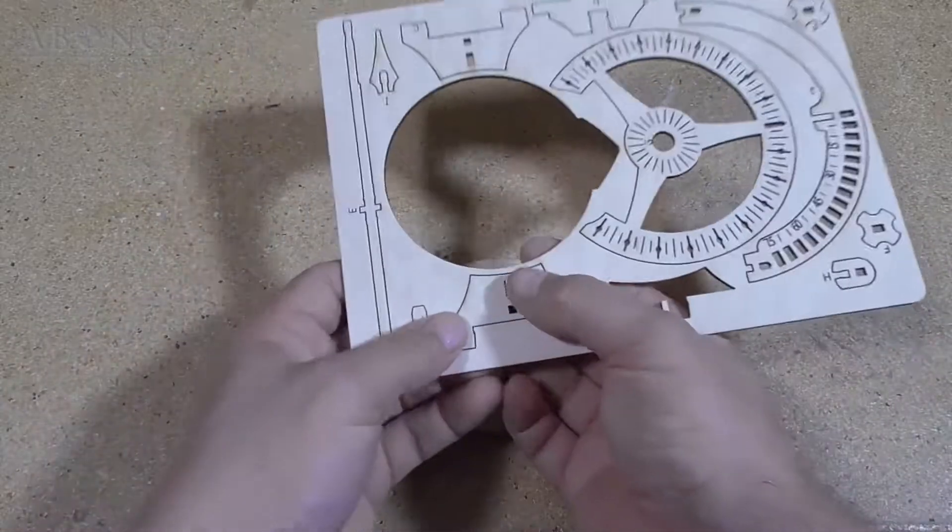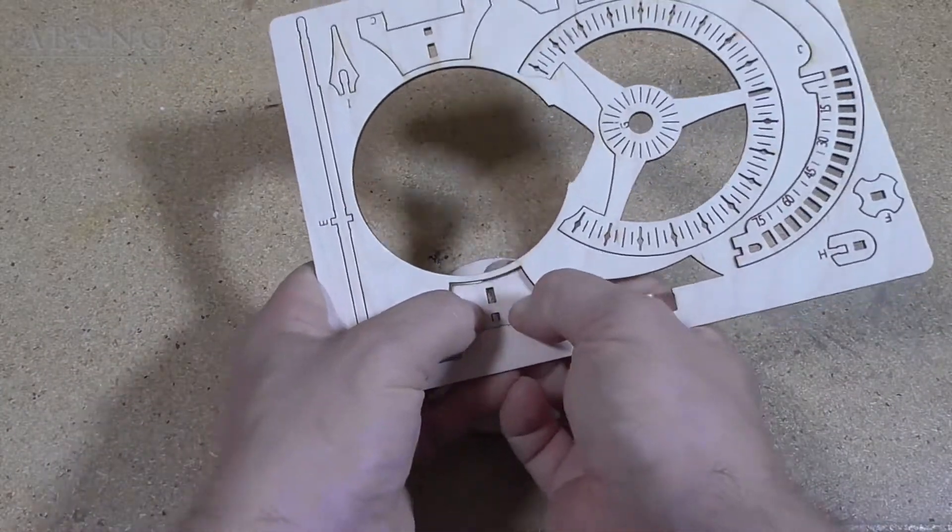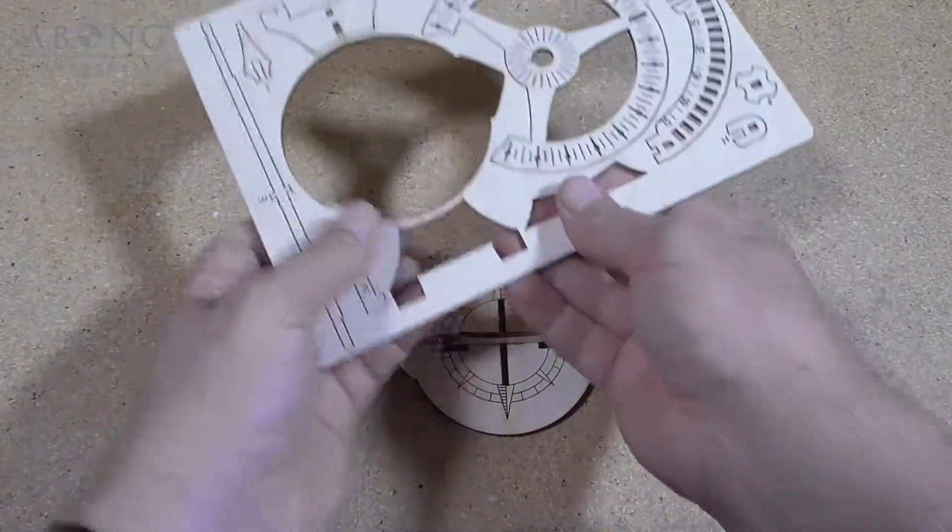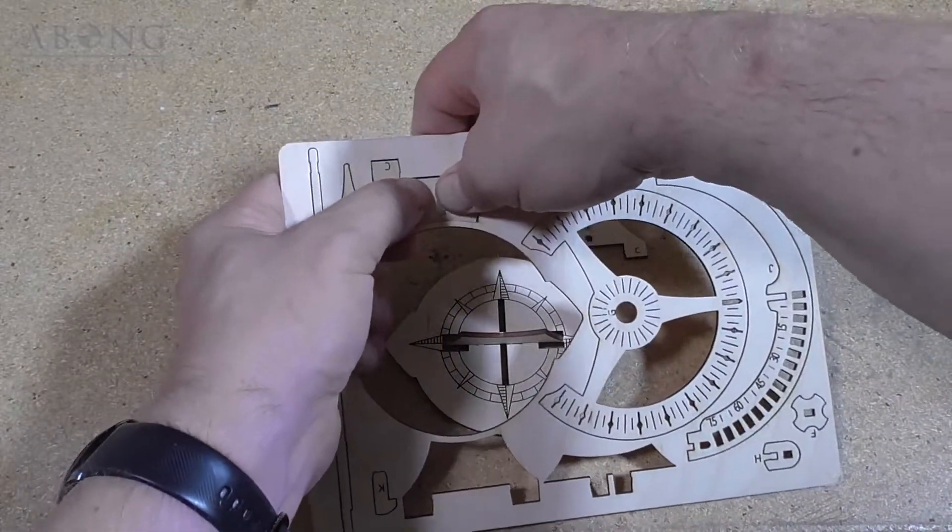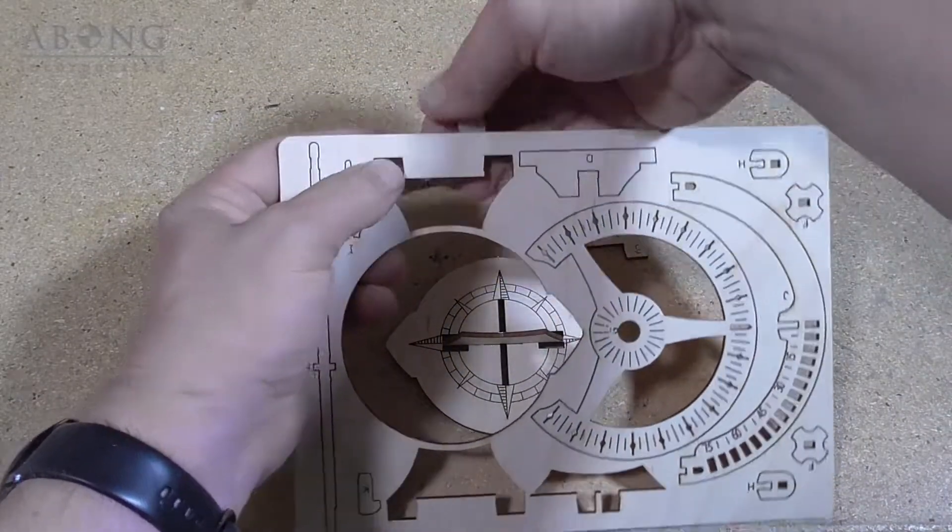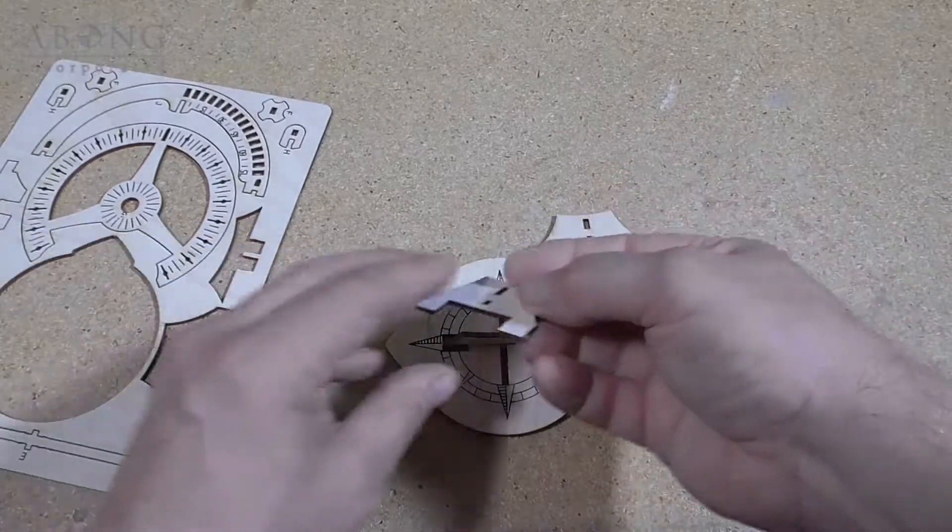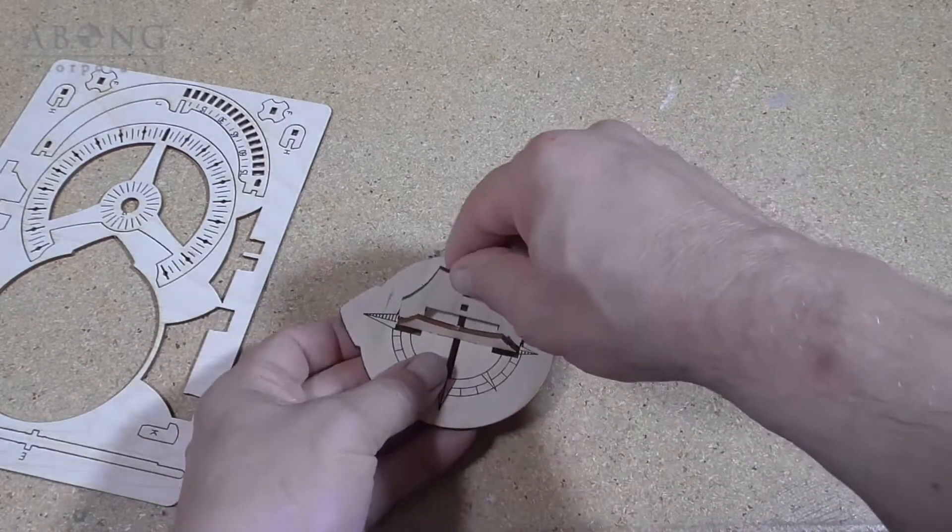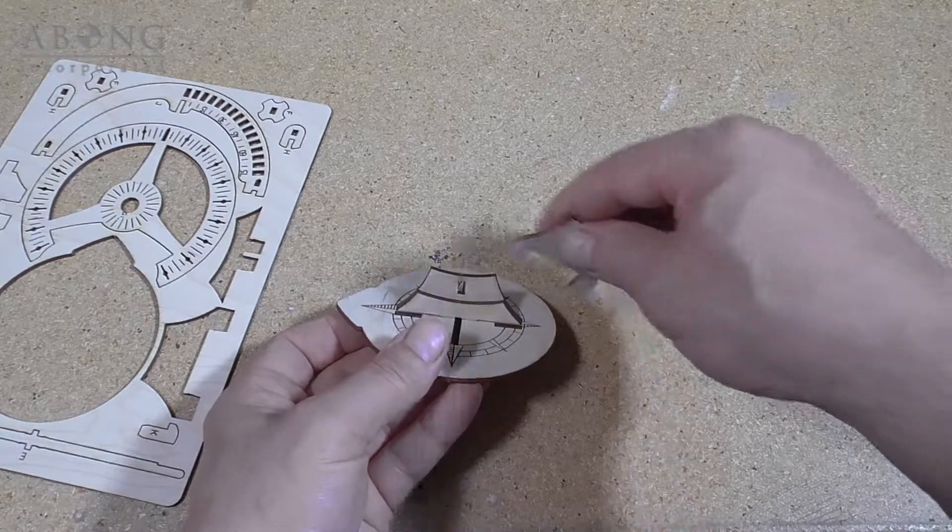Now we go with part C. There's two part C's. And they simply snap right beside the other part.